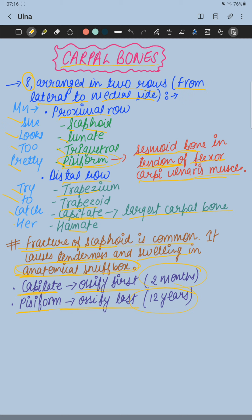The mnemonic 'She Looks Too Pretty, Try To Catch Her' maps as follows — She: scaphoid, Looks: lunate, Too: triquetral, Pretty: pisiform, Try: trapezium, To: trapezoid, Catch: capitate, Her: hamate. That's all about carpal bones.